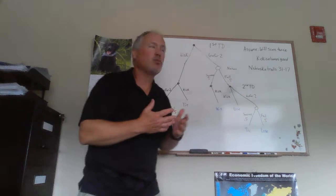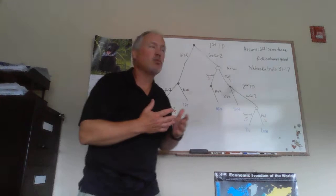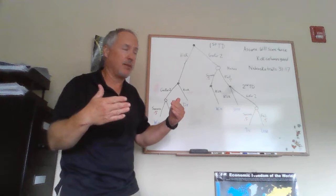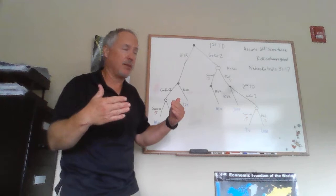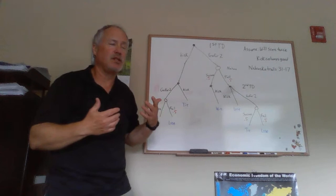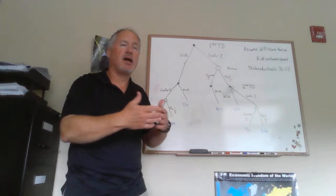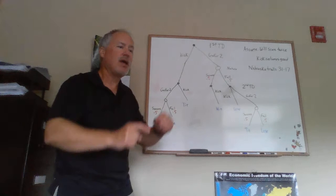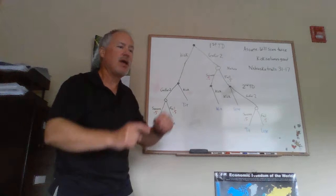One assumption we're going to make: let's assume the team trailing by 14 points is going to score twice and the other team is not going to score in the interim. We set up two decisions for the trailing team — we assume there's going to be a first TD and then a second TD. The question is: do you kick the extra point or go for two after each TD? What Nebraska did was kick the extra point after the first touchdown, making it 31–24, then scored again to make it 31–30, and decided to go for two. We can show that strategy was dominated.